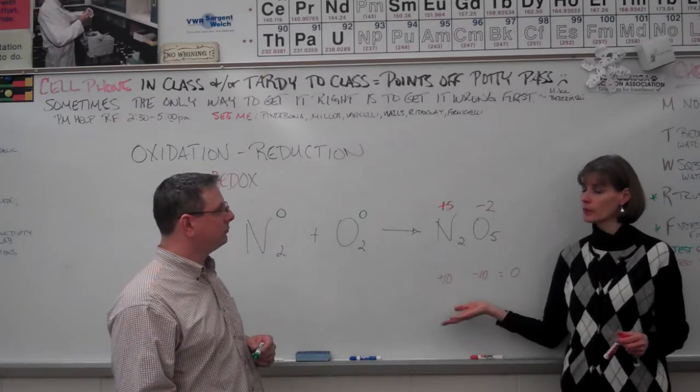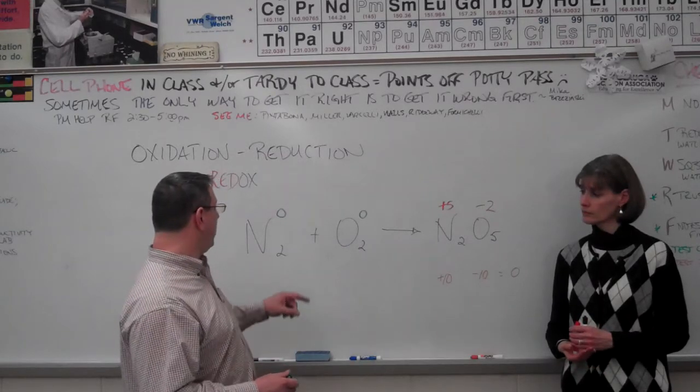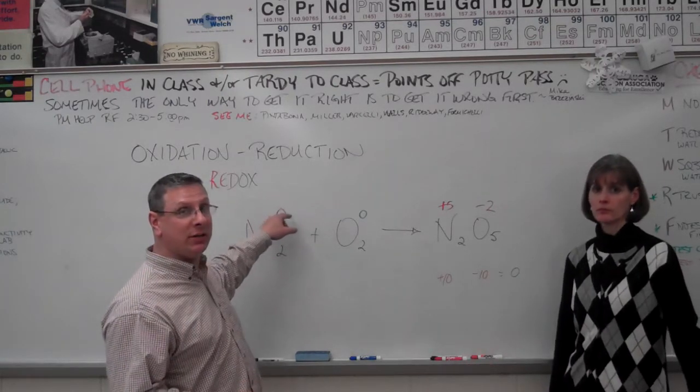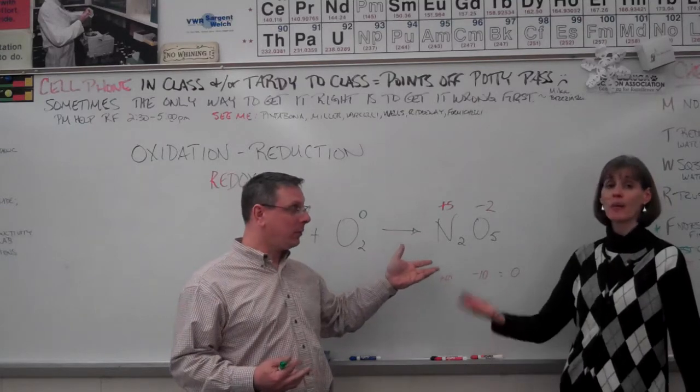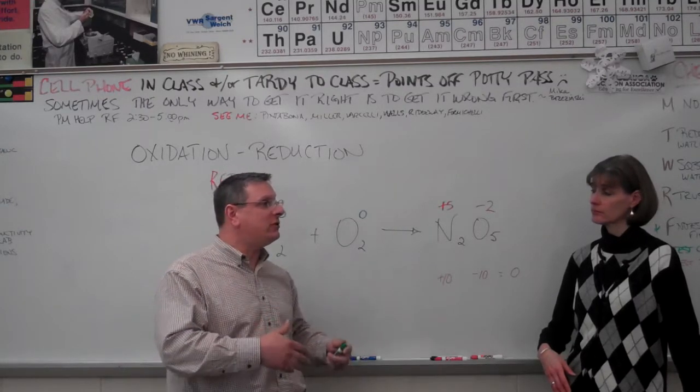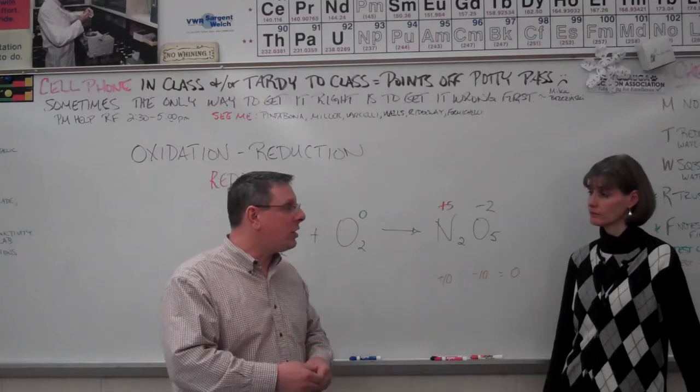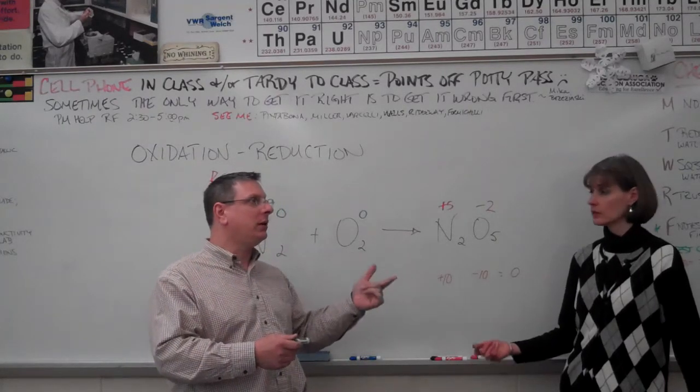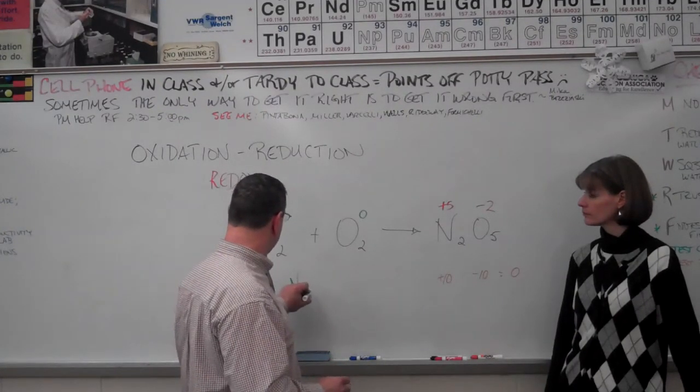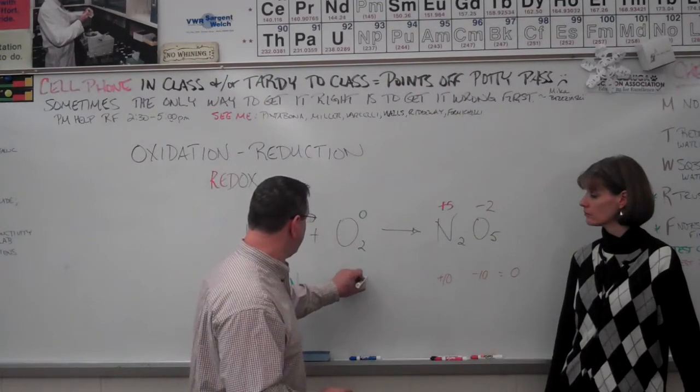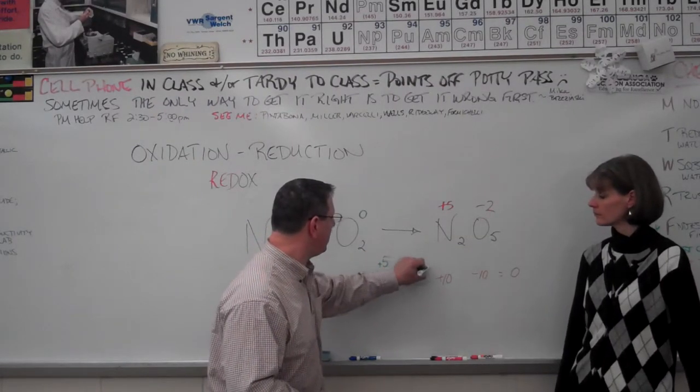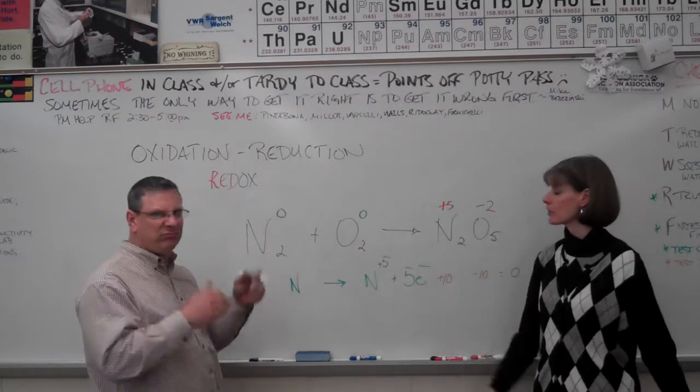And what element was oxidized? Well, we have nitrogen had a zero oxidation number, and it became plus five. It became more positive. So that means it feels as though it has lost five electrons. So losing electrons is oxidation. So nitrogen became N with plus five because it feels as though it lost five electrons. And we're not balancing here, so don't worry about the subscripts.